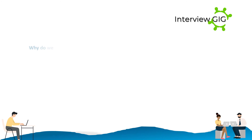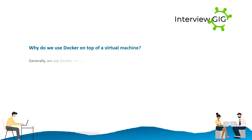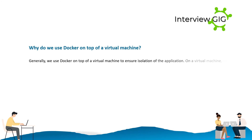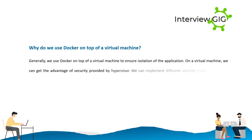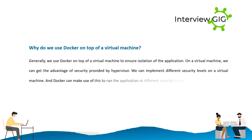Why do we use Docker on top of a virtual machine? Generally, we use Docker on top of a virtual machine to ensure isolation of the application. On a virtual machine, we can get the advantage of security provided by the hypervisor. We can implement different security levels on a virtual machine, and Docker can make use of this to run the application at different security levels.